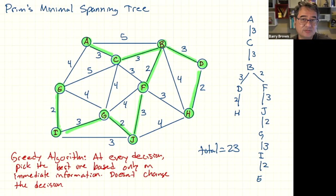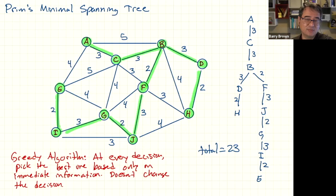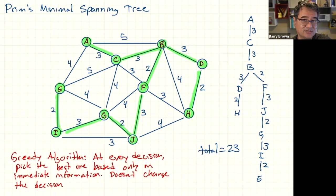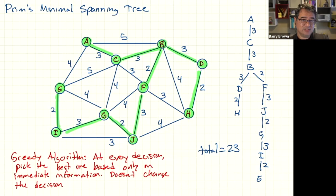A greedy algorithm makes a decision and sticks to it, as opposed to a backtracking algorithm, which occasionally goes back and changes its mind. If you're solving a maze, you might go down one branch and realize it's a dead end, then back up and try a different branch — that's a backtracking algorithm. But a greedy algorithm looks at the available information, makes a decision, sticks with it, and moves on to the next step.